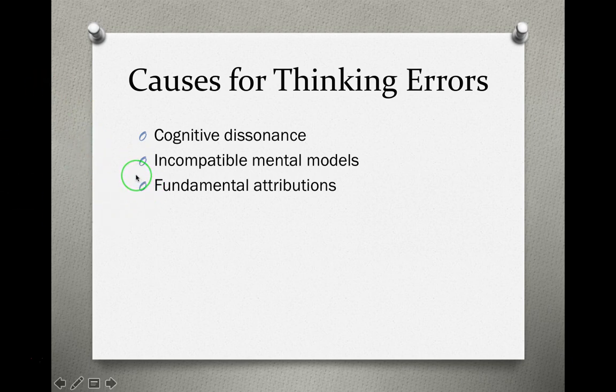Fundamental attribution error is when an observer or clinician is biased in favor of one thing over another. They might say this aggressive behavior the individual is engaging in right now has to be due to their intellectual disability, and not maybe to something going on in their environment or something else. So just assuming — they have a disability, so because they're doing this, it must be because of their disability and not some other difficulty.